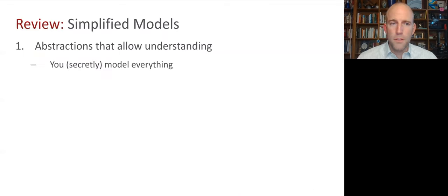So simple models are abstractions that allow us to understand things, and we secretly model everything. No real thing in its full complexity can fit into our brain. Everything in there is a simplified representation of reality. So when we say we understand something or we know something, what we really mean is we have a model of it.